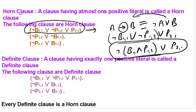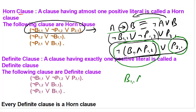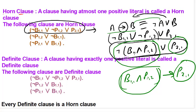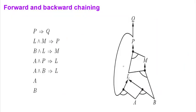So this particular horn or definite clause can be converted to an implication, and implication means we can make inferences. Simply, 'A implies B' means if A then B. Horn and definite clauses can be converted to if-then form, and if-then can be used for making inferences. Now let us see how forward and backward chaining can be used to make inferences.